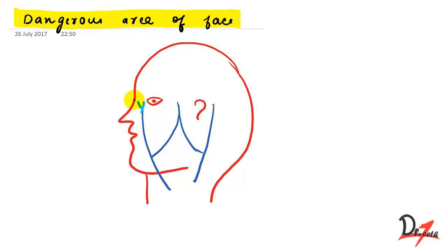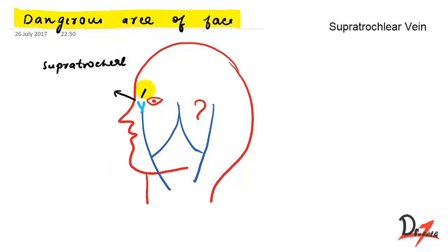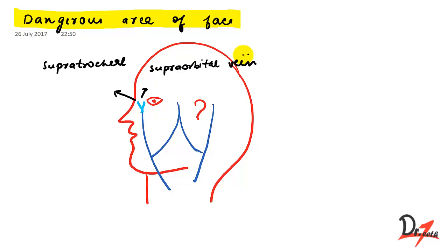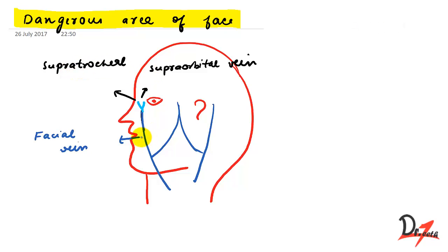The first divisions are the supra-trochlear vein and the supra-orbital vein. These two, as we can see, unite and form the facial vein. So the supra-trochlear and supra-orbital veins unite to form the facial vein, and here we also have two more divisions.